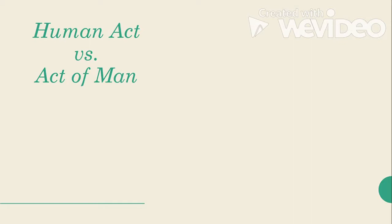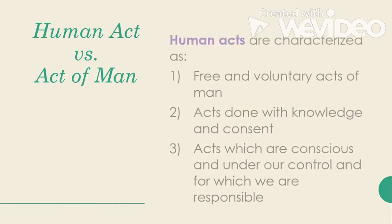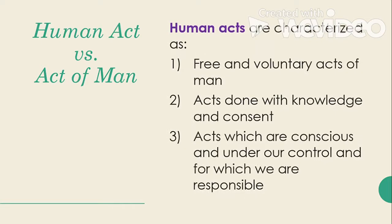It is important that we differentiate human acts from acts of man. Human acts are actions that proceed from the deliberate free will of man — in other words, man is responsible for these acts. These actions are done with knowledge and consent and are willfully carried out by the person. Human acts are either good or evil, and their morality depends on the object chosen, the intention, and the circumstances. Human acts are characterized as the free and voluntary acts of man: the person is aware of the act, acts with knowledge and consent, allows the act to happen, and acts consciously and under control, for which they are responsible.